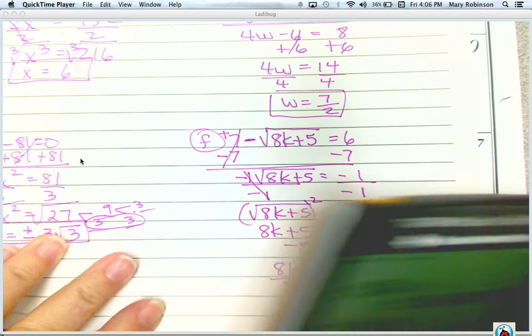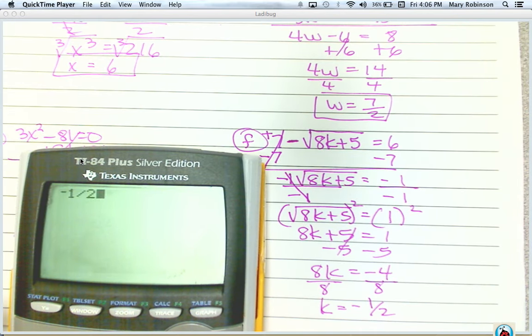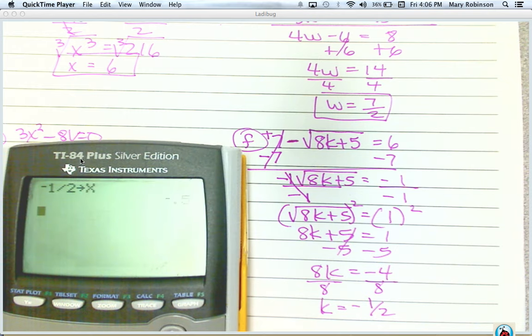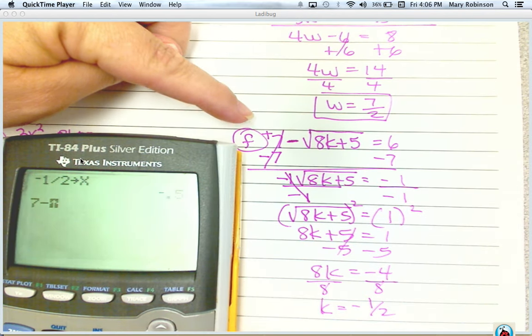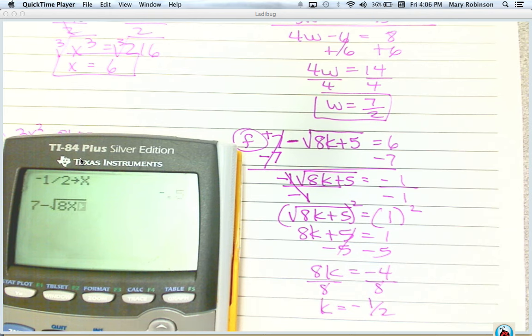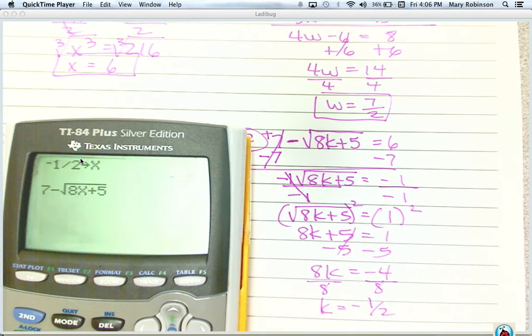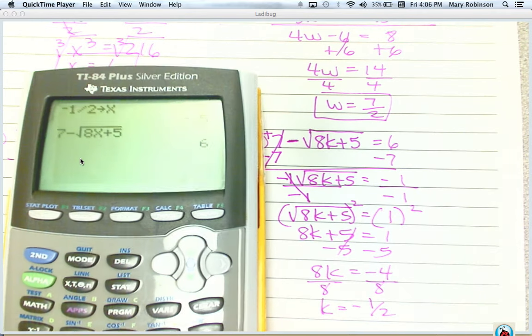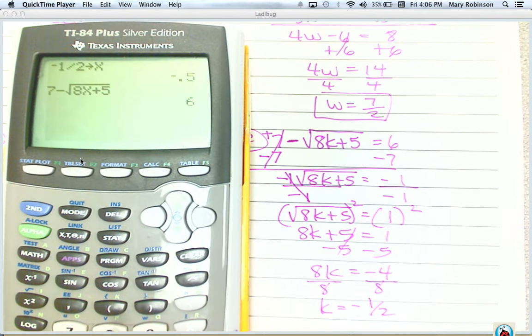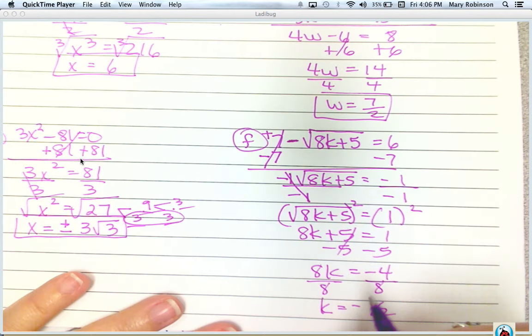So let's take our negative 1 half and store it for x. And then go back to our original problem. 7 minus the square root of 8x plus 5. And hopefully, it comes out to equal 6. It does. I'll put it where you can see it. It did come out to equal 6, so our answer is correct.